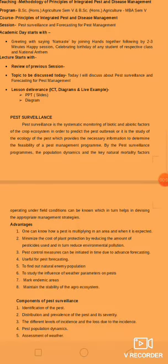First, let us define pest surveillance. Pest surveillance is the systematic monitoring of biotic and abiotic factors of the crop ecosystem in order to predict the pest outbreak, or it is the study of the ecology of the pest which provides the necessary information to determine the feasibility of a pest management program.